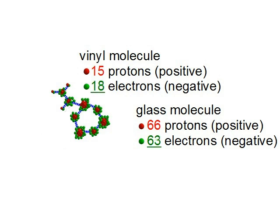As a result, the vinyl now has 18 negative electrons, since that's where the three electrons went. And the glass now has 63 electrons, since that's where the electrons came from.